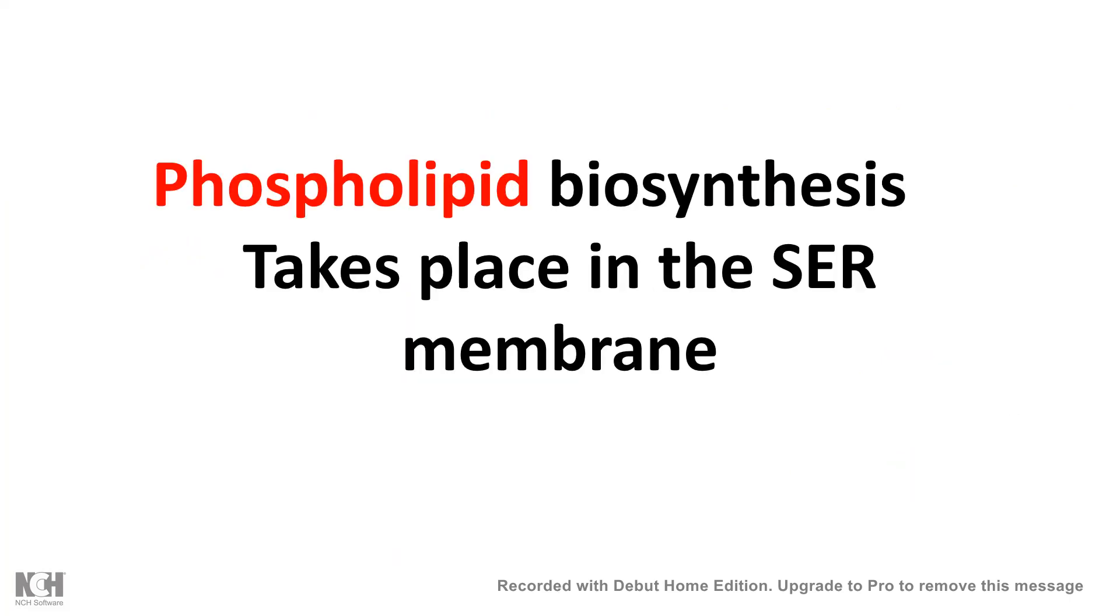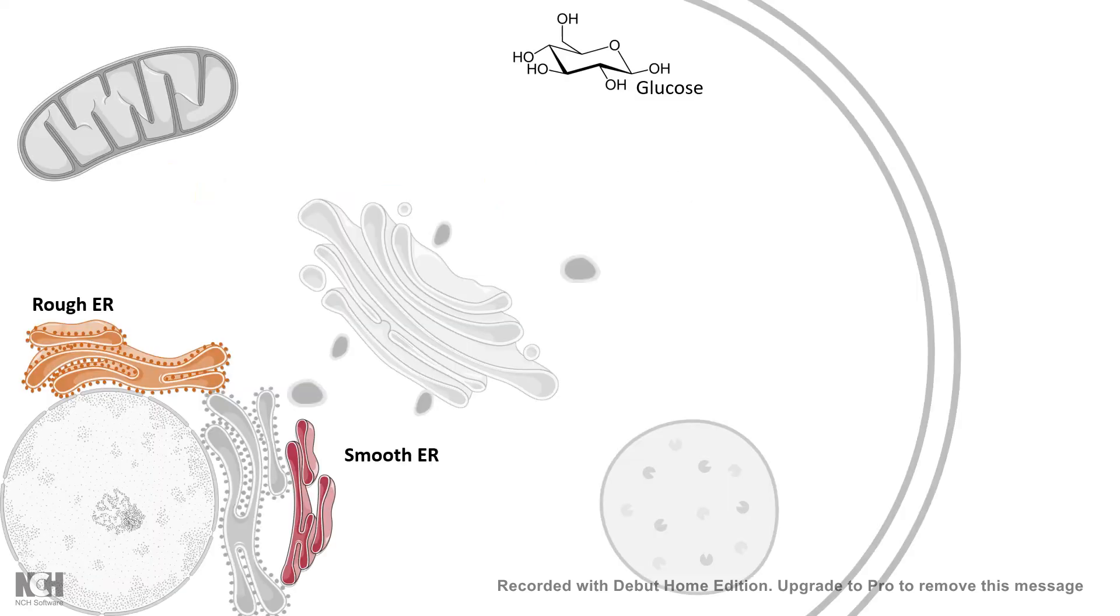Now, phospholipid biosynthesis takes place in the smooth endoplasmic reticulum. Because we have to understand how the phospholipid is synthesized at the first place. So we know that inside the cell, in the cytoplasm, glucose gets converted to acetyl-CoA.